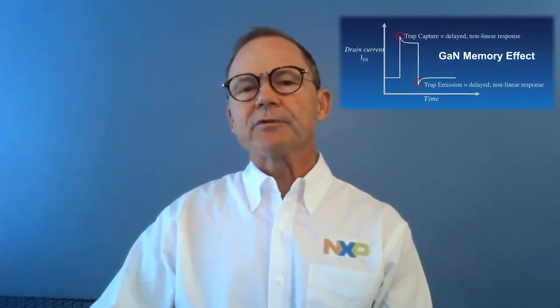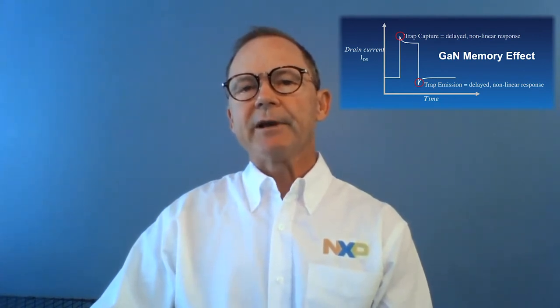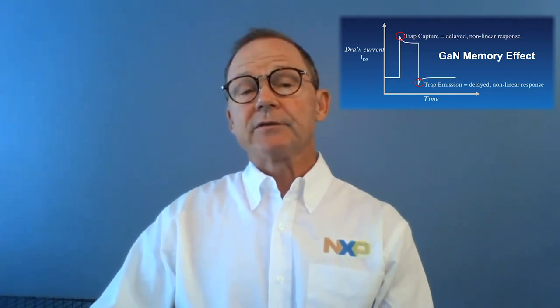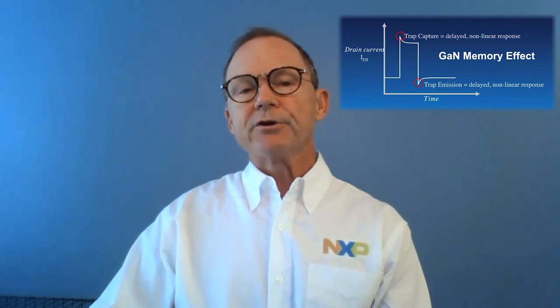These defects cause electron traps that make it difficult for the transmitter system to compensate in both static and dynamic conditions. This is often referred to as having memory, because the device behavior may depend on the operating point in time. For instance, amplifier gain or linearity may be a function of time or temperature.